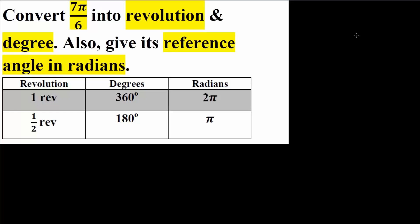In this video we want to convert 7π over 6 radians into revolutions and into degrees. So let's get started. Currently we have 7π over 6 and we want to convert it into revolutions.